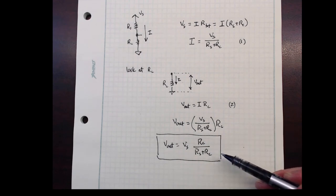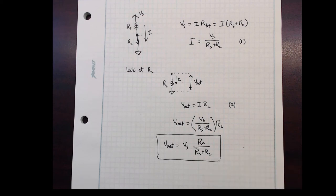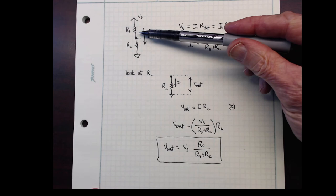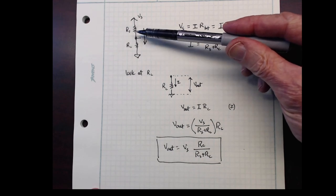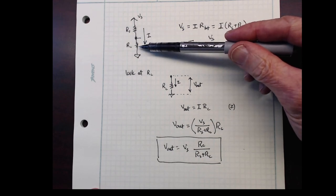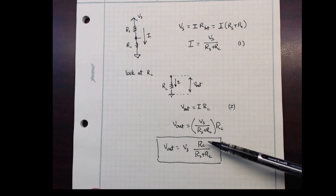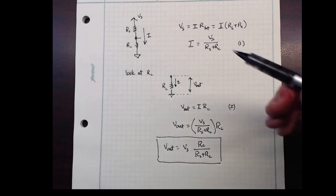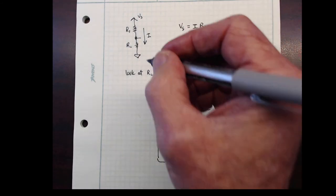In summary, this applies to either a potentiometer or a sensor circuit where the resistor is on top. We could switch these around. We could put the sensor resistor in the bottom, and then we would just get a different formula. We would have RS over RC plus RS. It would behave differently.